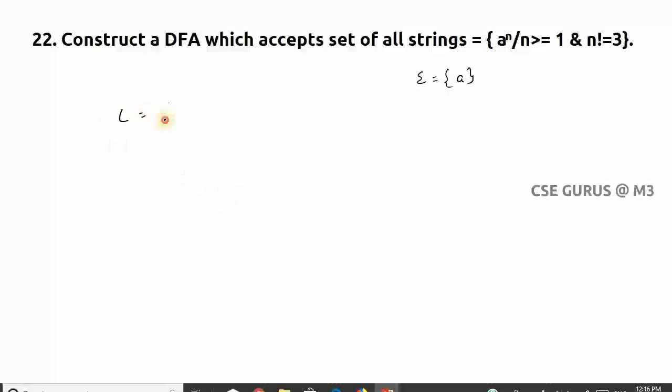First I will construct the language. If I give n as 1, that is 'a'. n as 2, 'aa'. n as 3 - note that n≠3. n as 4, you need to consider. n as 5, like this.